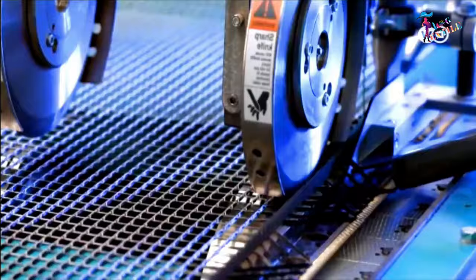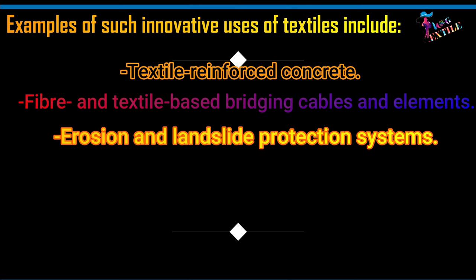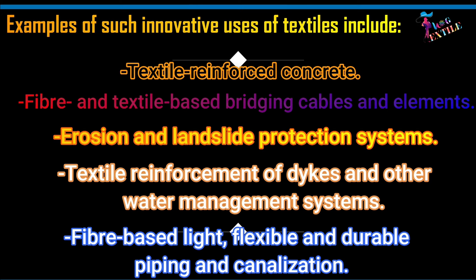Billtech, or construction textiles, are technical textiles used in construction or building purposes. Examples of innovative uses include textile-reinforced concrete, fiber and textile-based bridge cables and elements, and erosion and landslide protection systems.